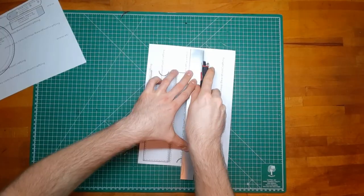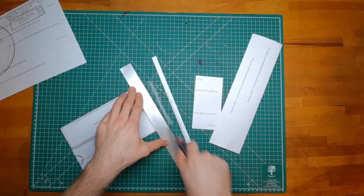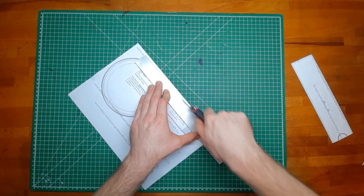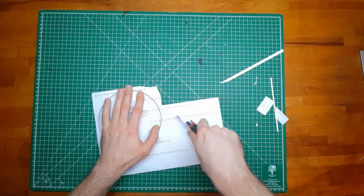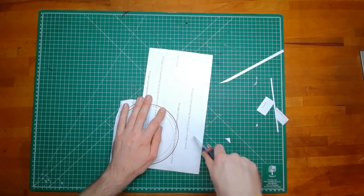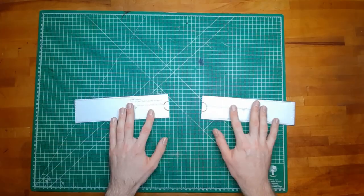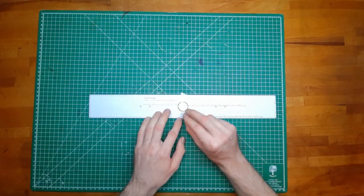Starting with the pattern as always, print it out, cut away any excess and tape the pieces together. The round side walls do not necessarily have to be cut out in detail since we are using a wing divider to get the circle.